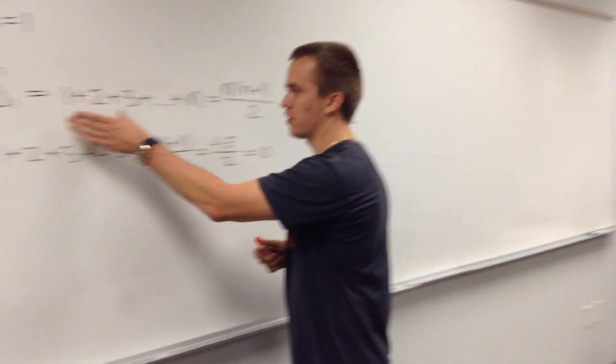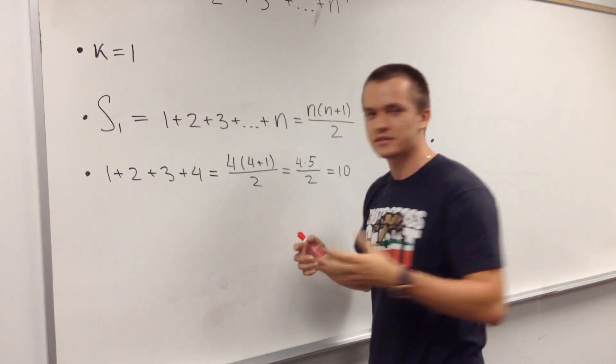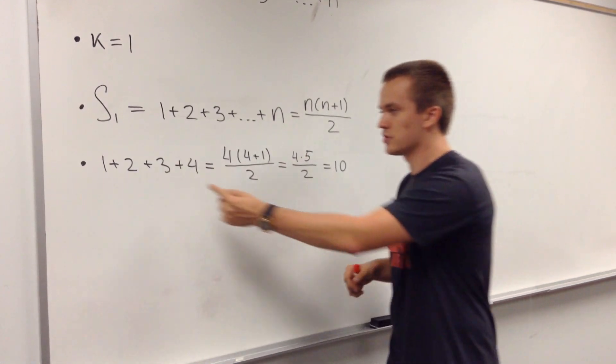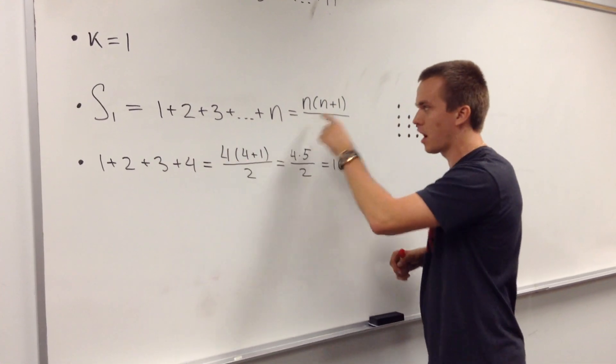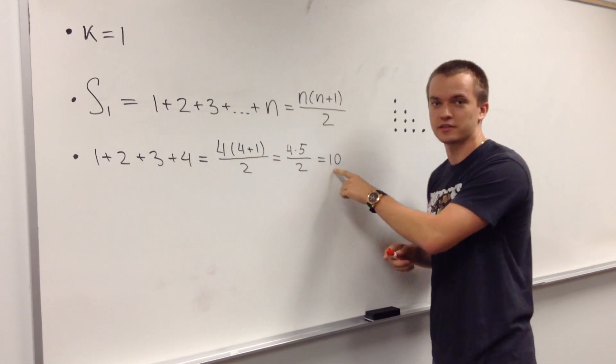Okay guys, we just found this general formula and let me show what the picture stands behind this. So let's take just some simple case when n is equal to 4. So in this case we have 1 plus 2 plus 3 plus 4. I just plug in my n equal to 4 into this formula and I got result as 10.